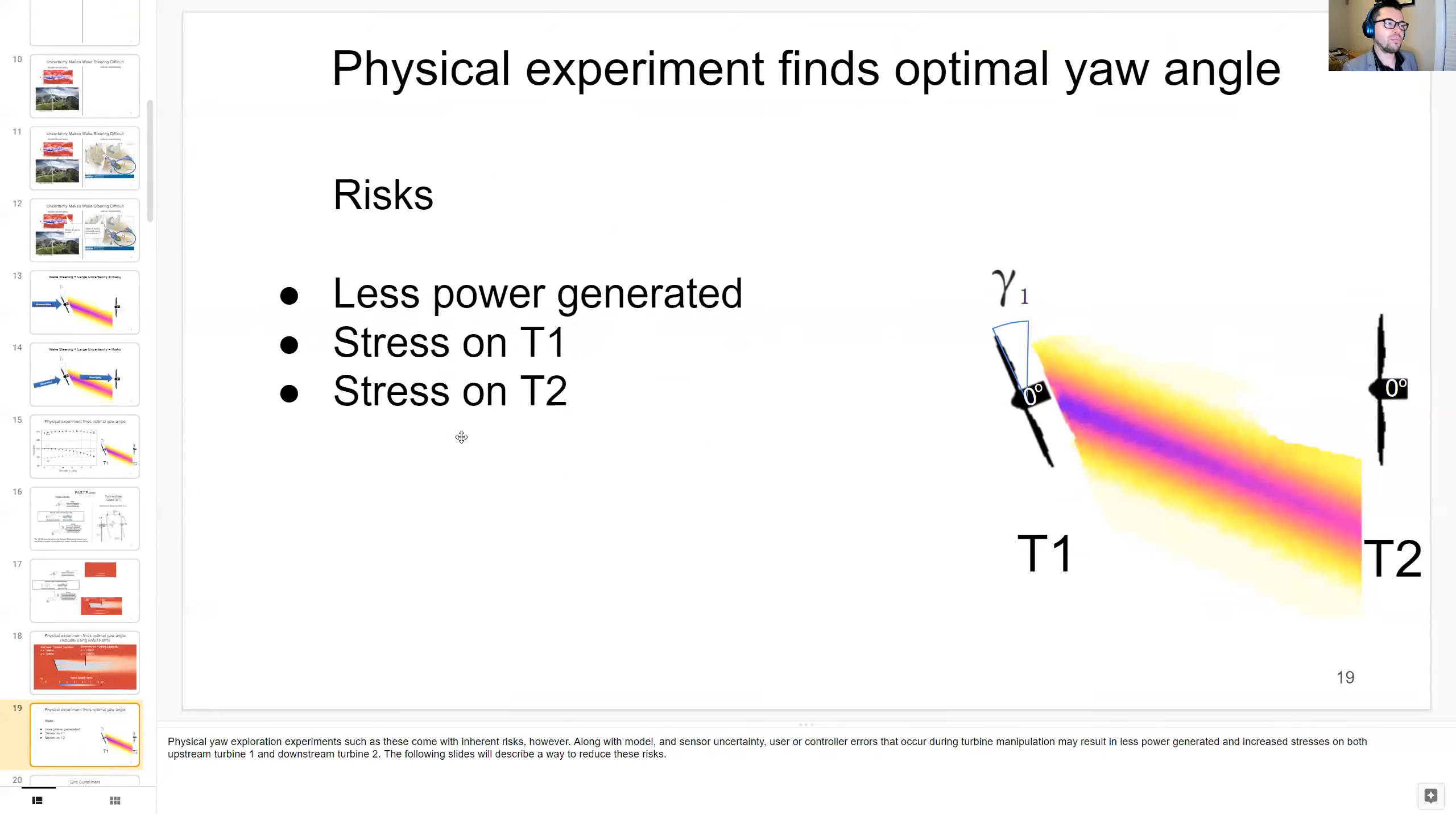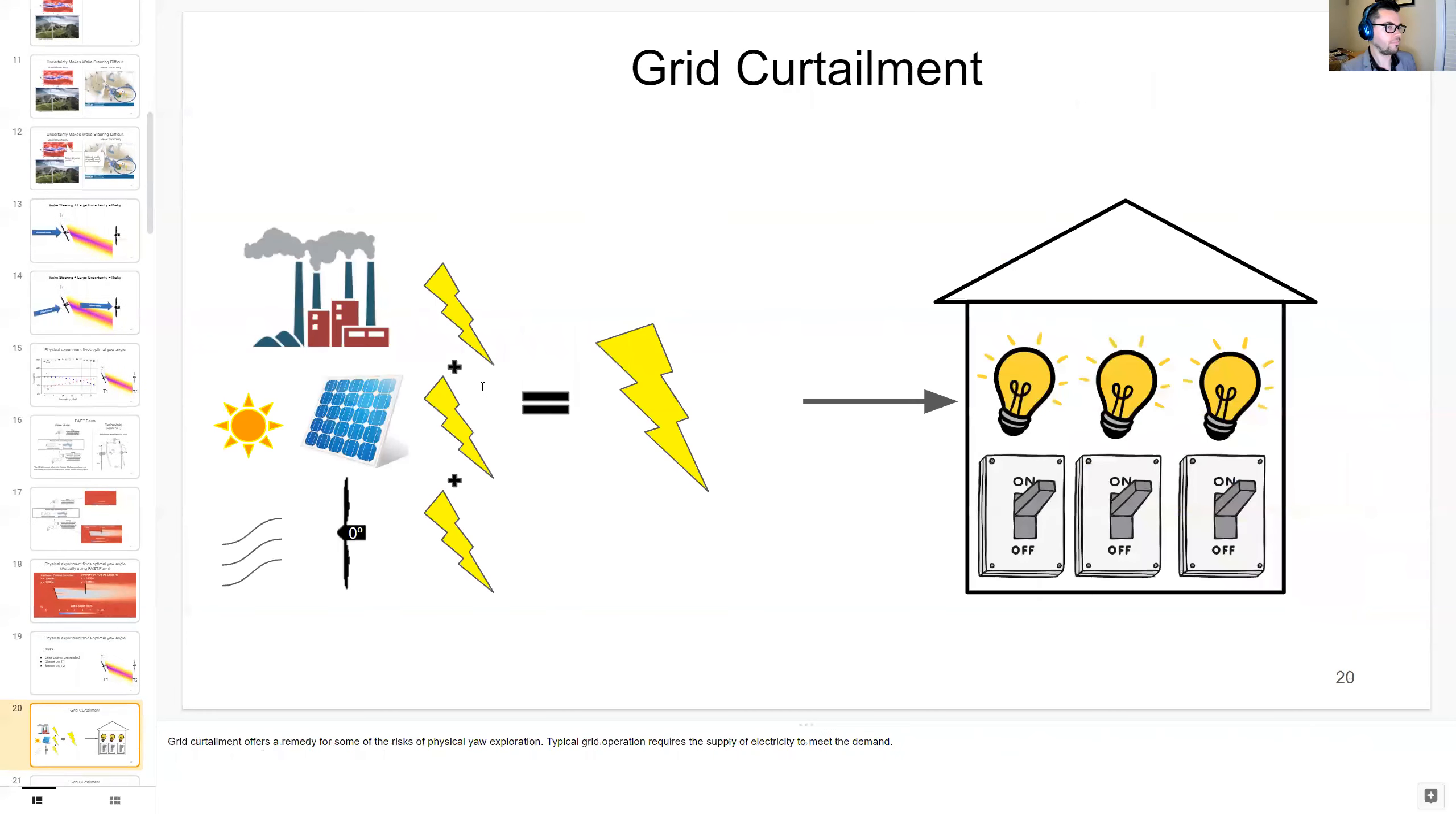Now as I mentioned before, there are downsides of physical experimentation. The inherent risks of this is that you might generate less power, and there might be more stresses on turbine 1 and turbine 2 than if you were just normally operating the wind turbines. But this brings us to grid curtailment, which is a possible way to mitigate some of those risks of physical exploration.